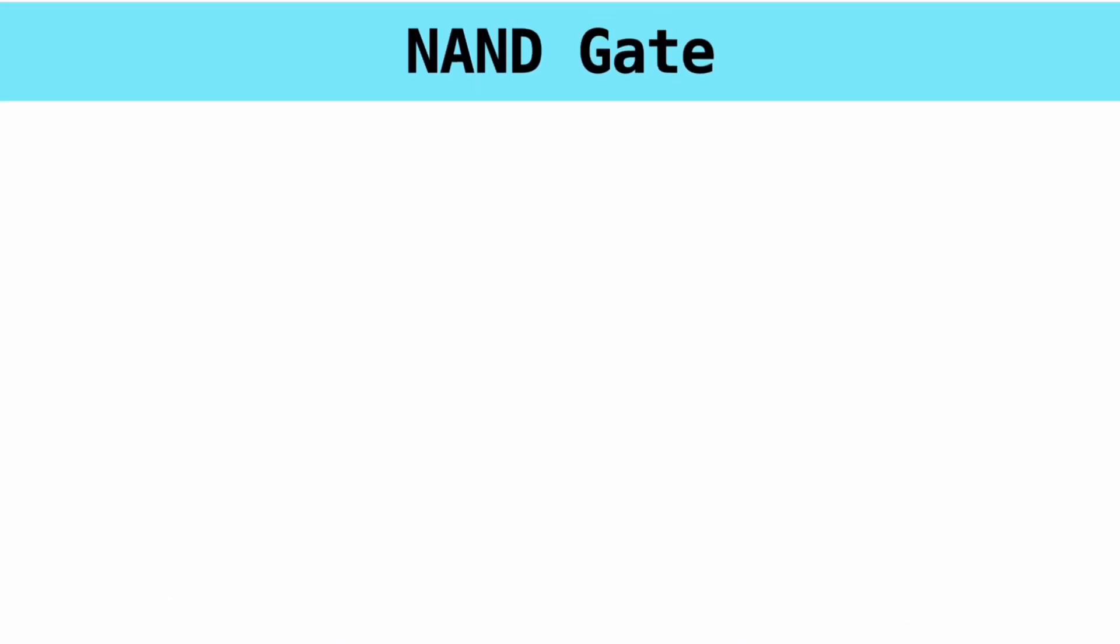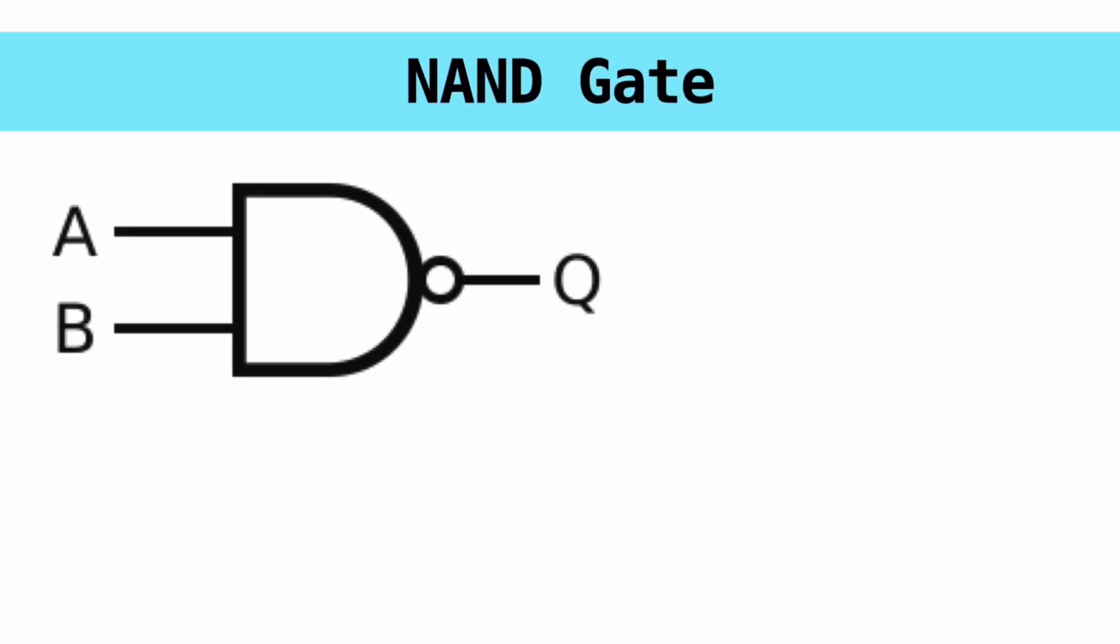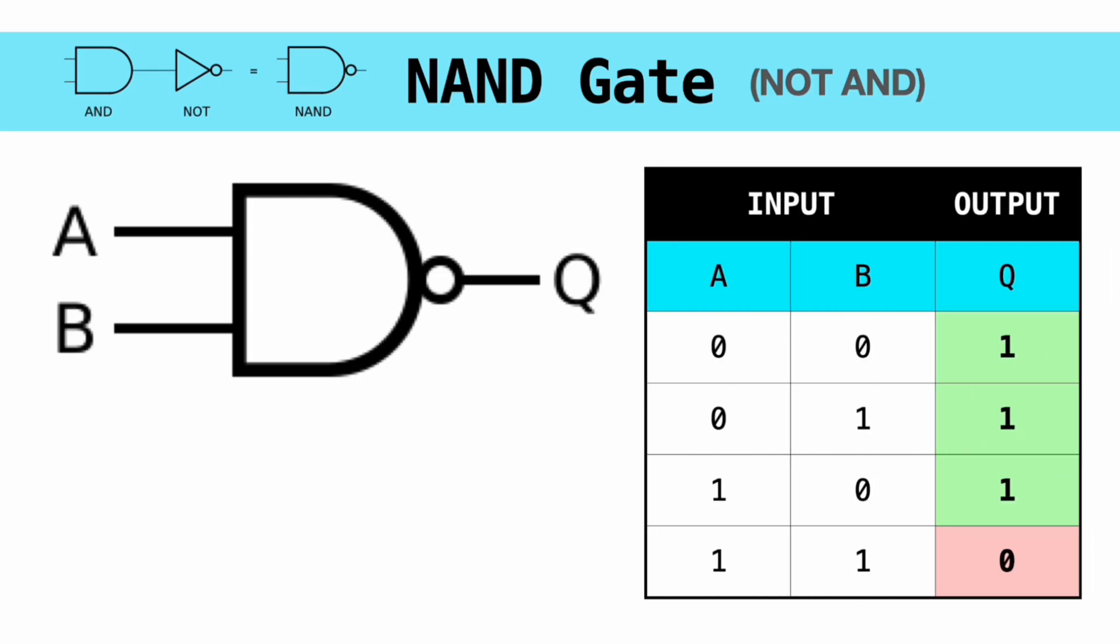Next is the NAND gate, which is the complete opposite of the AND gate. NAND is an abbreviation for NOT AND, and the gate is basically an AND gate followed by a NOT gate. As you can see here from its truth table, this gate produces the opposite results of the AND gate.